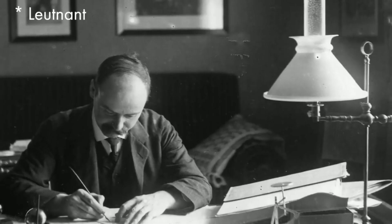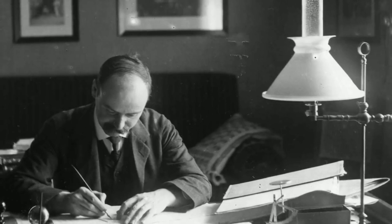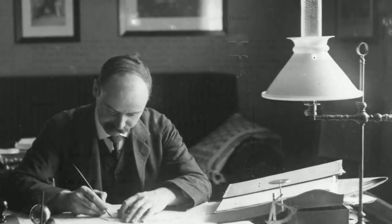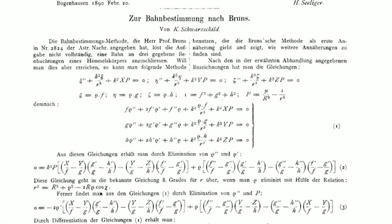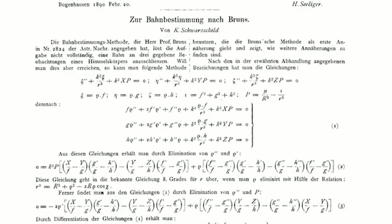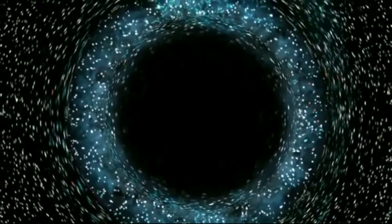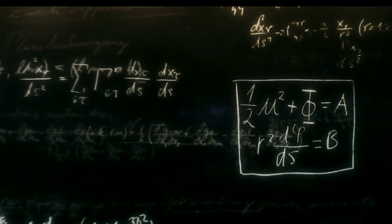Karl Schwarzschild was the first person to realize that Einstein's equations of general relativity predicted the existence of black holes. More specifically, his black hole contained a singularity at its center. A singularity is a point of infinite density where time itself came to an end. At the singularity, all the known laws of physics break down. This troubled Einstein.